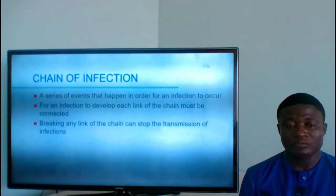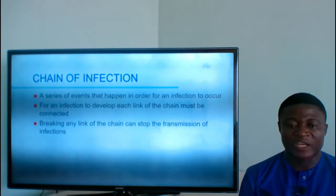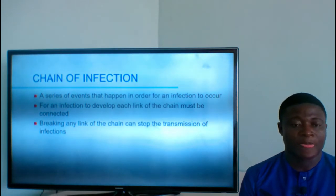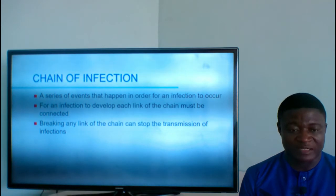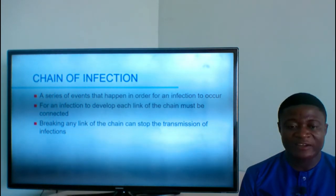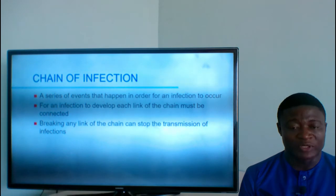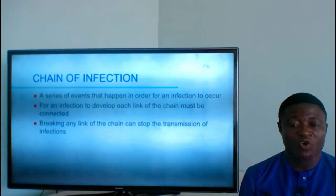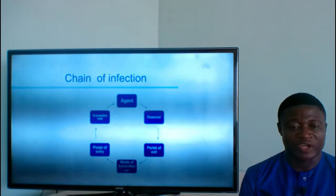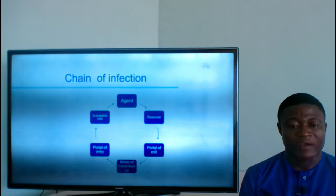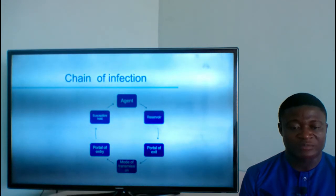The chain of infection is a series of events that must happen in order for an infection to occur. Each link of the chain must be connected for an infection to develop. Breaking any link can stop the transmission. The chain consists of: the agent, the reservoir, the portal of exit, the mode of transmission, the portal of entry, and then the susceptible host.